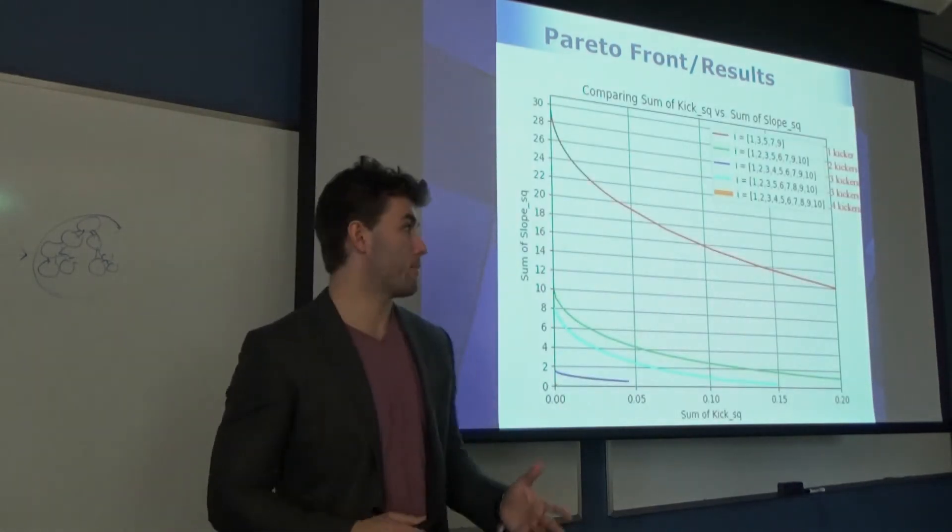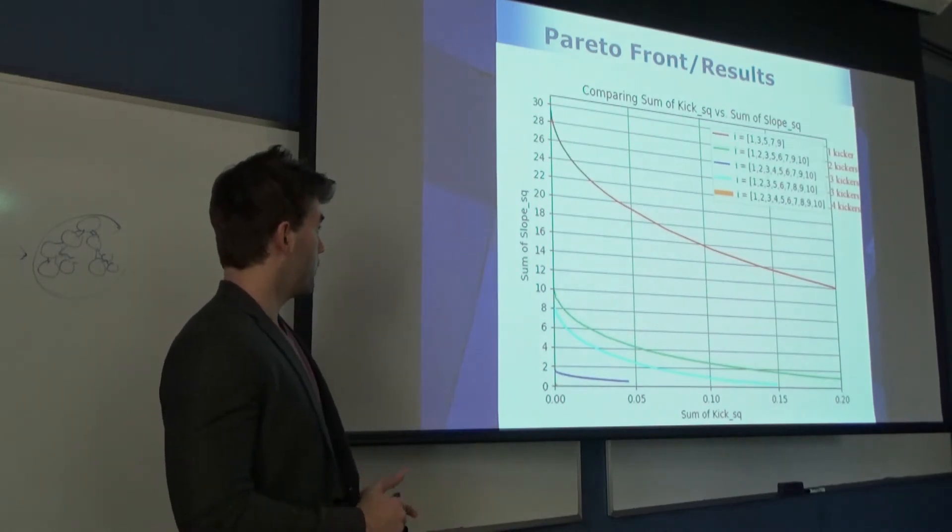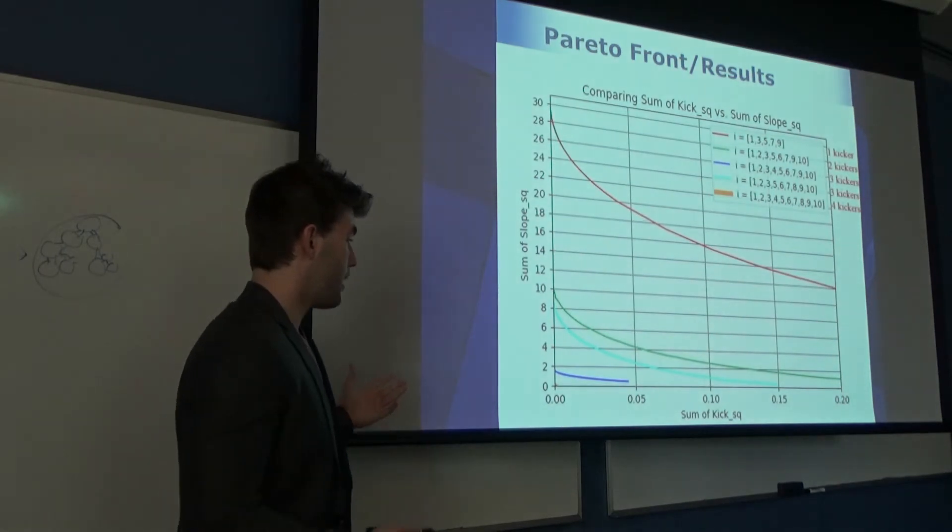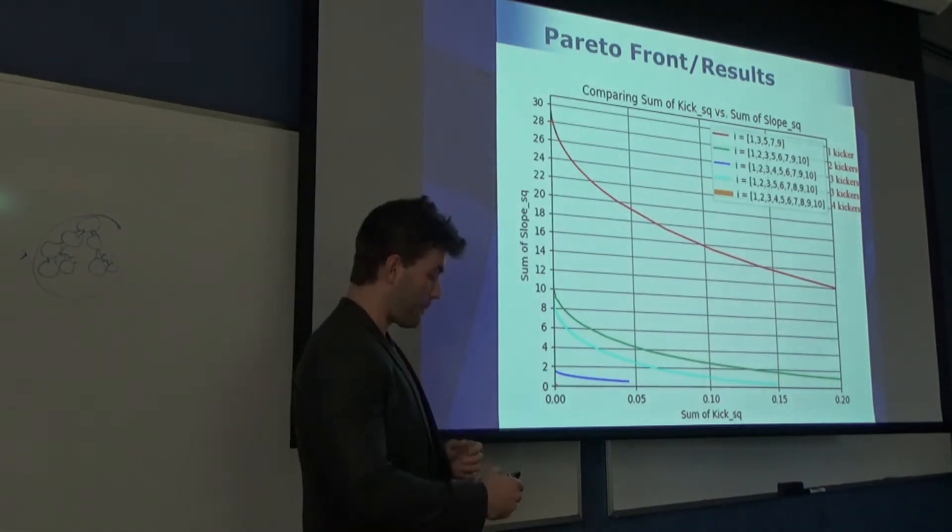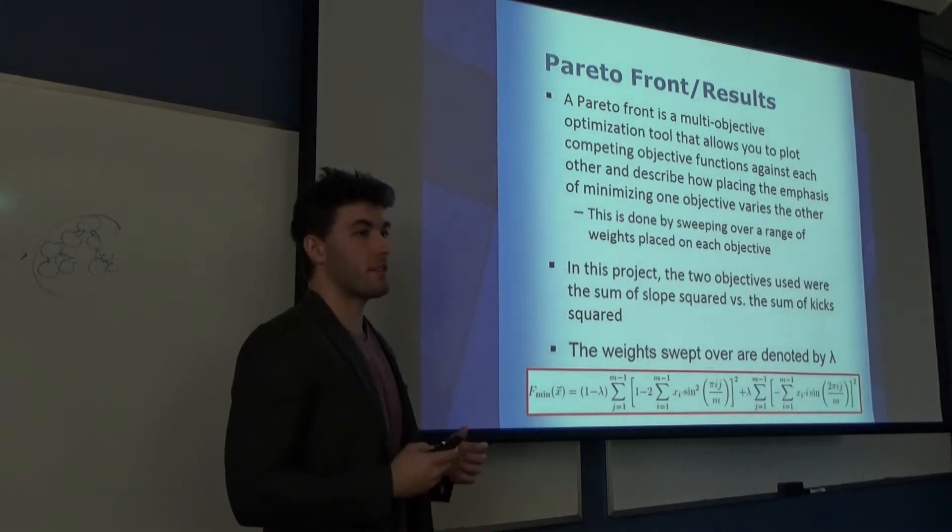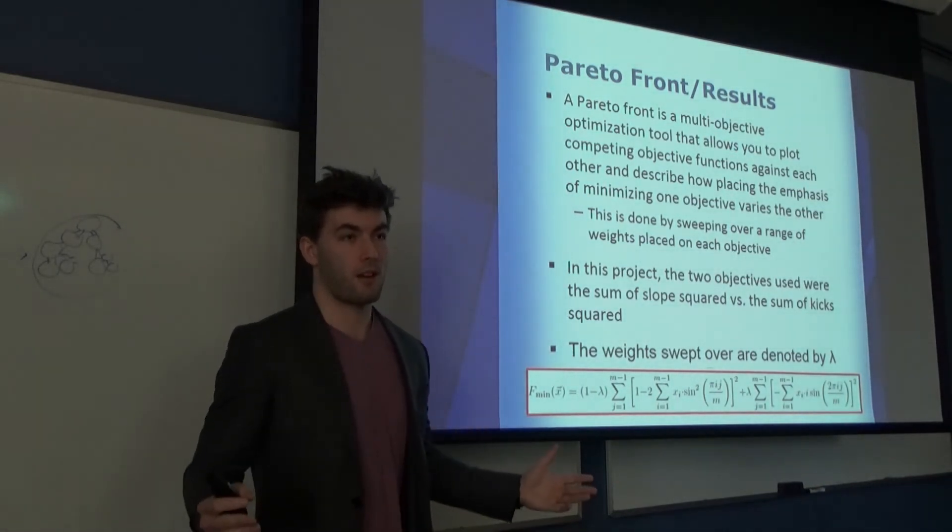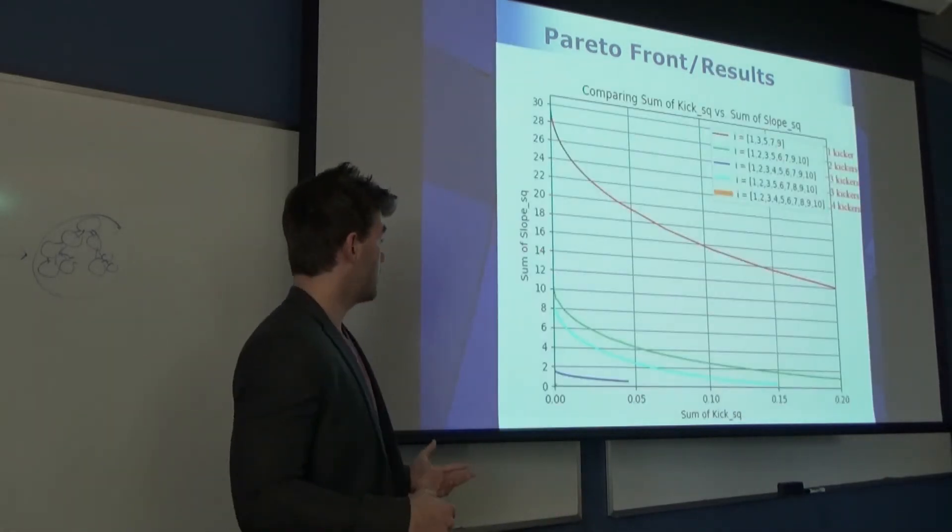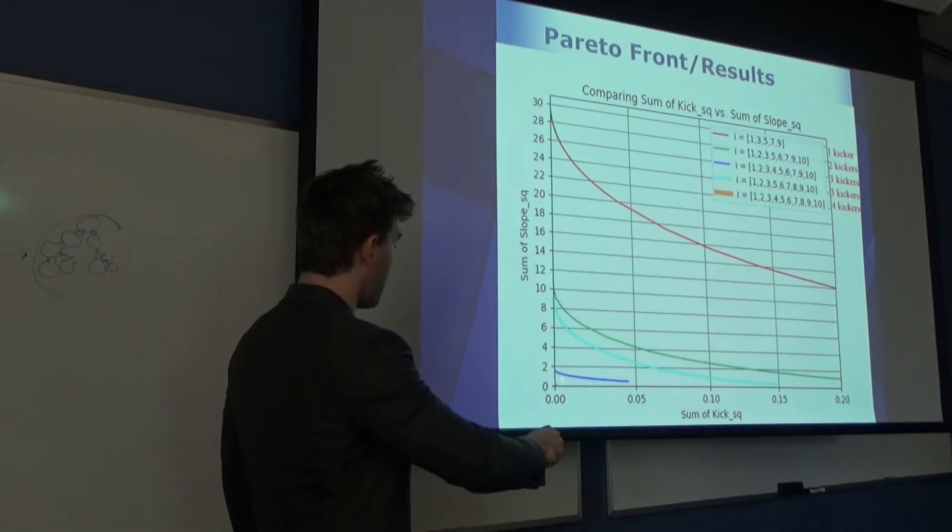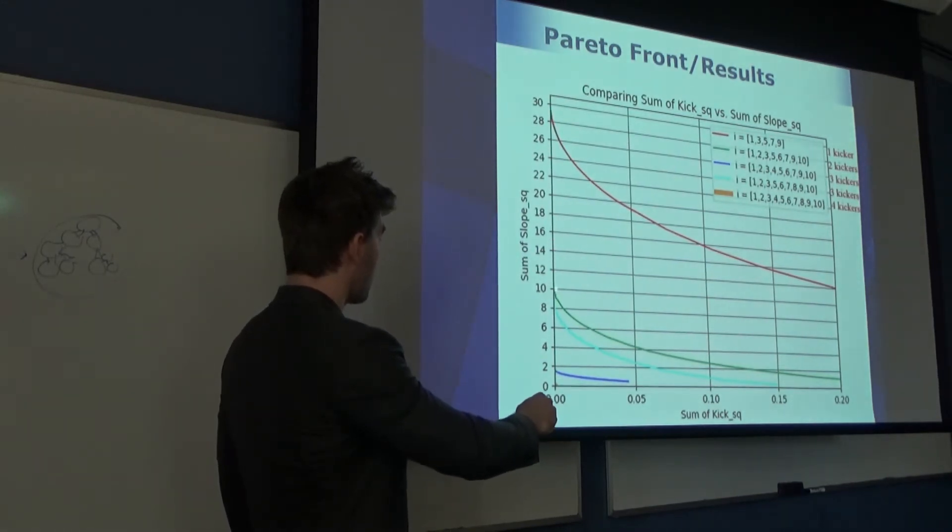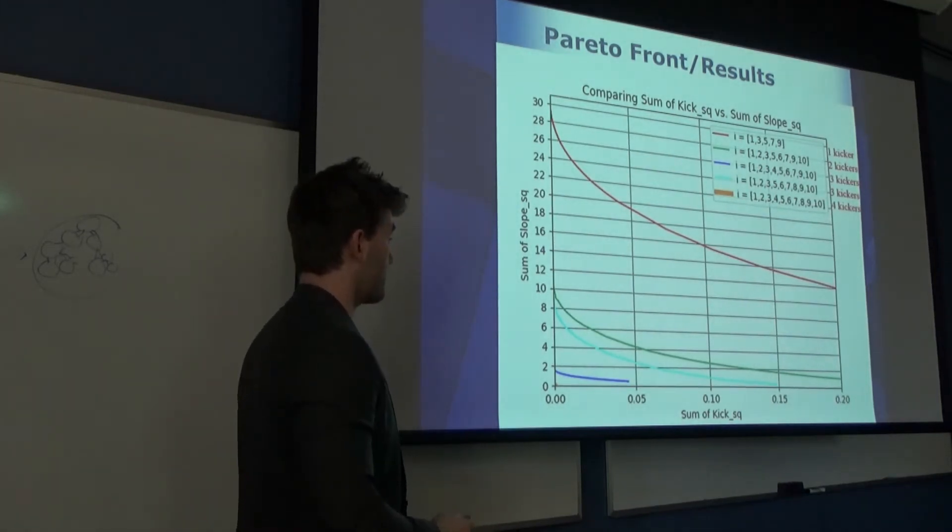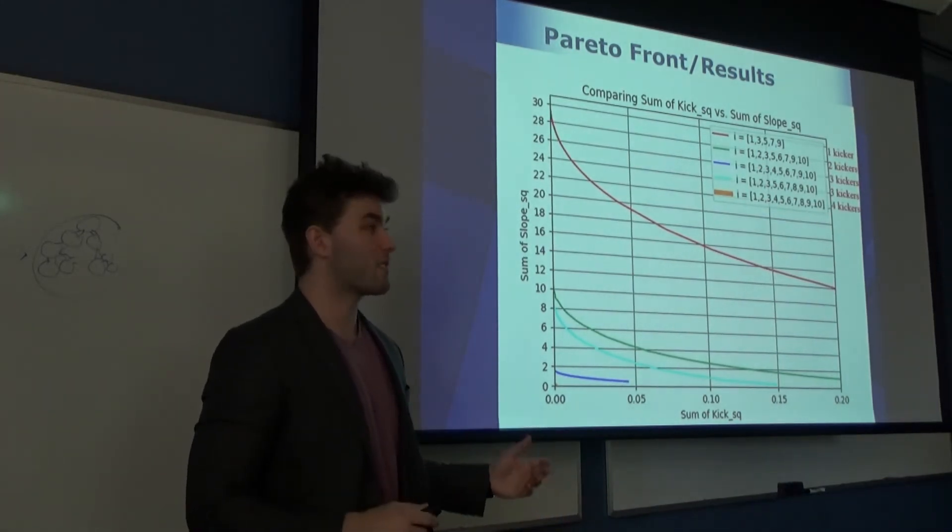These are going to be the two objectives. This is the analog to the price versus quality. We're going to be facing off kick and slope against each other and seeing which one is more important. So after graphing the Pareto front, we can have our sum of the slope squared versus the sum of the kick squared. I said that at lambda equal to zero, we're only going to be minimizing the kick. That means that the slope is free to be any arbitrarily large value that it wants to be. So at lambda equal to zero, the kick is minimized, but we get slopes gradually going up as we use fewer and fewer kickers. And then the inverse is true if we focus on only minimizing the slope.